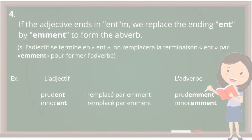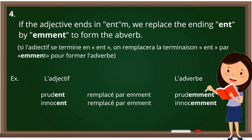Rule number four: if the adjective ends in -ent, we replace the ending -ent with -emment. For example, 'prudent' and 'innocent' both have the ending -ent. We replace it with -emment, so 'prudent' becomes 'prudemment,' and 'innocent' becomes 'innocemment.'